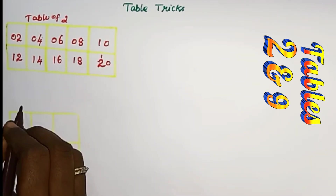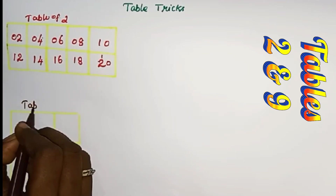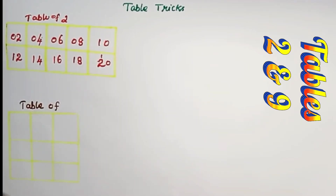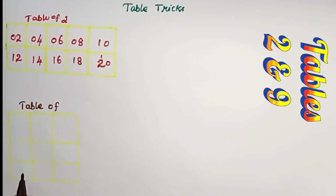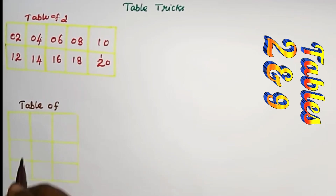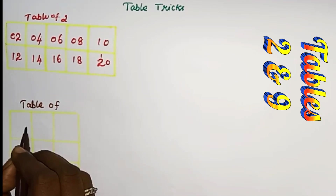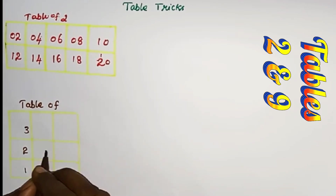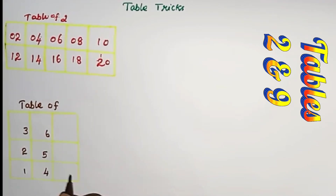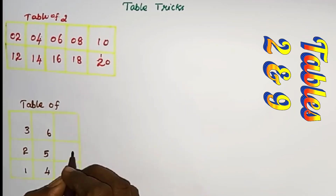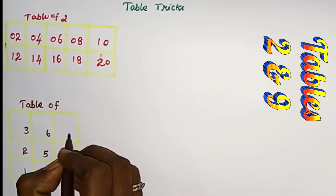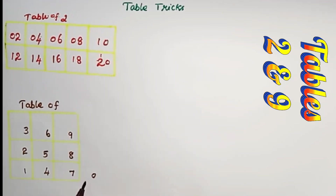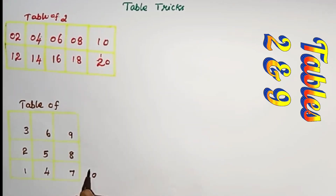Table of 3. Start from 1, start here. 1, 2, 3, 4, 5, 6, 7, 8, 9 and then 0, 10.